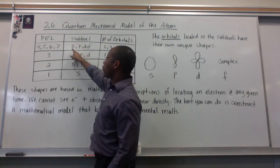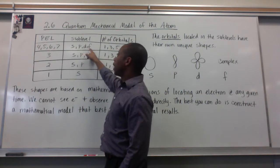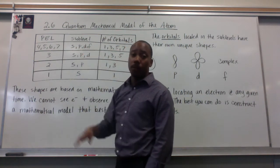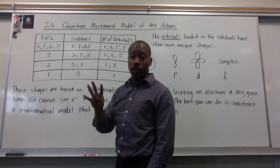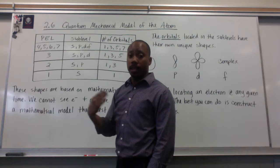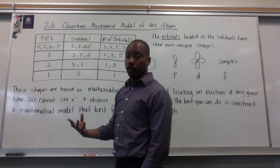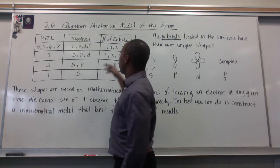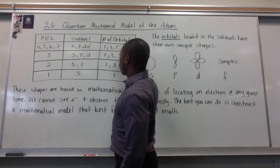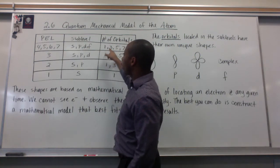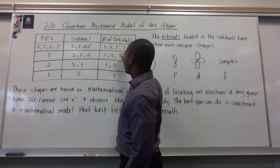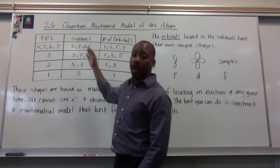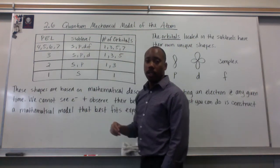They have four sub-levels: S, P, D, and F. I can have no more than four sub-levels in an energy level. And the number of orbitals correspond as one, three, five, and seven respectively.